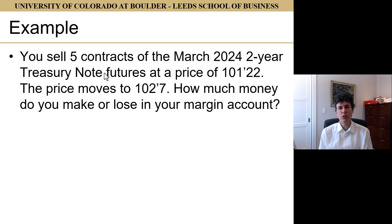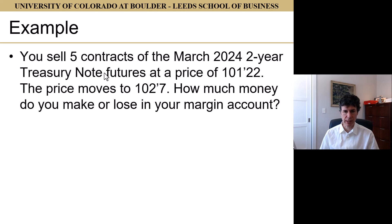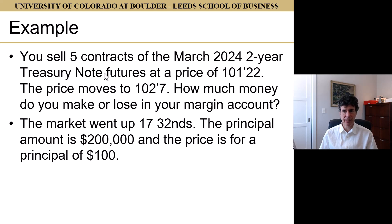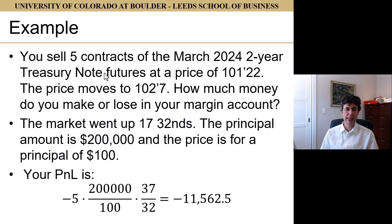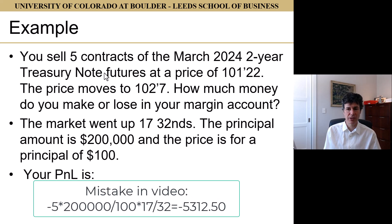Let's do an example. You sell five contracts of the March 2024 2-year Treasury note futures at a price of 101-22, and the price moves to 102-07. How much money do you make or lose in your margin account? The market went up 17/32nds: from 22 up to 32 is 10/32nds, then add another 7 to get to 102-07, so that's 17/32nds. The principal amount is $200,000 and the price is per $100 of principal. Our P&L is negative 5 (we lose money — the price is going up) times $200,000 divided by 100, times 17/32. That gives a loss of $11,562.50.